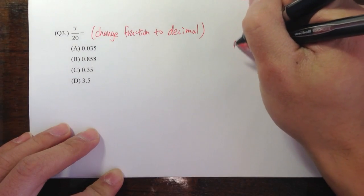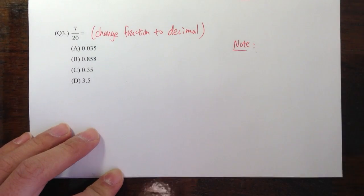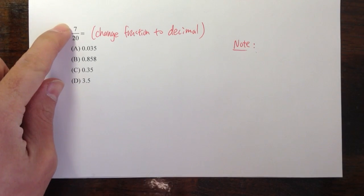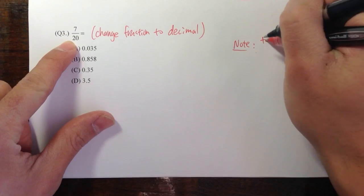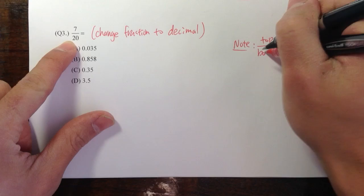Let me make a note on the side. When we have a fraction, the top is called a numerator, the bottom is called a denominator, but let me just write it as top over bottom.